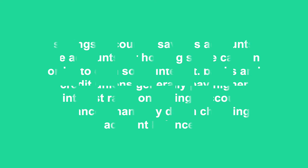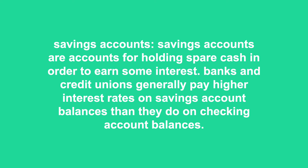Savings accounts are accounts for holding spare cash in order to earn some interest. Banks and credit unions generally pay higher interest rates on savings account balances than on checking account balances. But savings account interest rates have often lagged behind the rates of the best money market funds offered by mutual fund companies and brokerage firms. Online banking is changing that dynamic, and now the best banks and credit unions offer competitive rates on savings accounts. The virtue of most savings accounts is that you can earn some interest yet have penalty-free access to your money, without the fluctuation of a bond or the early withdrawal penalties of a CD.